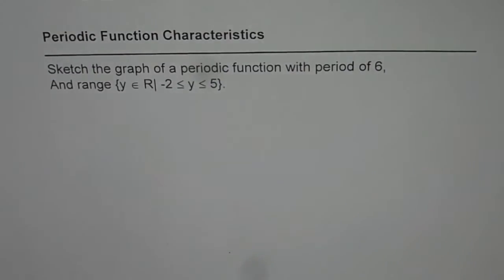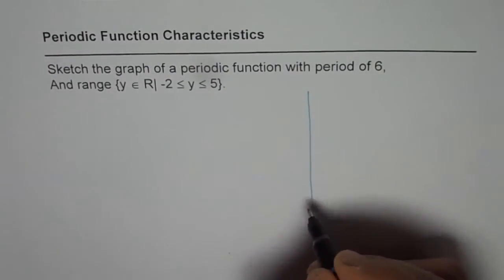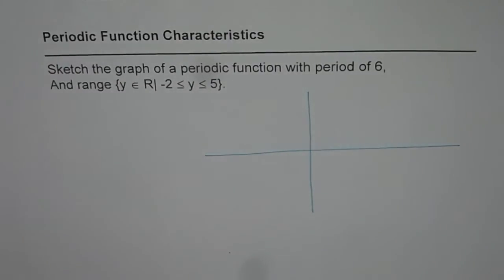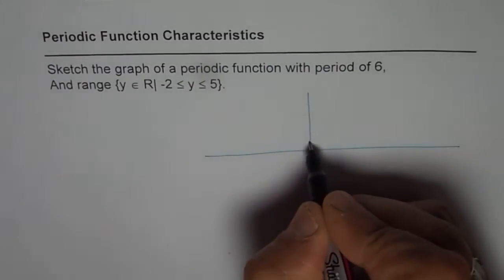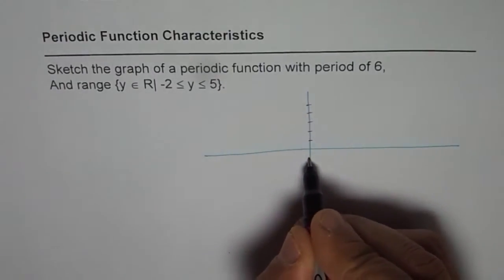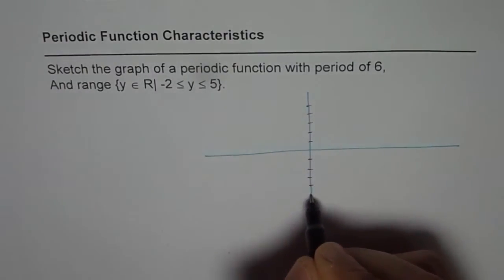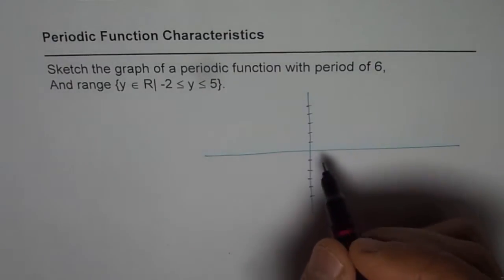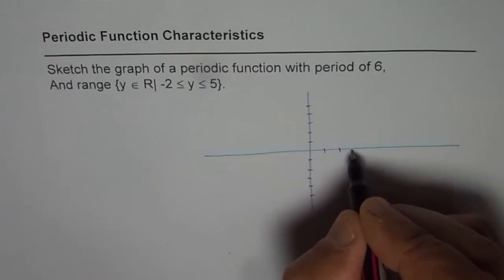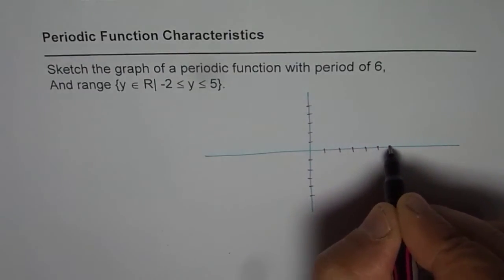So let us sketch this kind of a function. Now once we sketch the function your question is to write other characteristics of the sketched function. Okay, so let's have a scale here, so it's 1, 2, 3, 4, 5 and 1, 2, 3, 4, 5 on the negative side and period of 6 so let's say 1, 2, 3, 4, 5, 6.